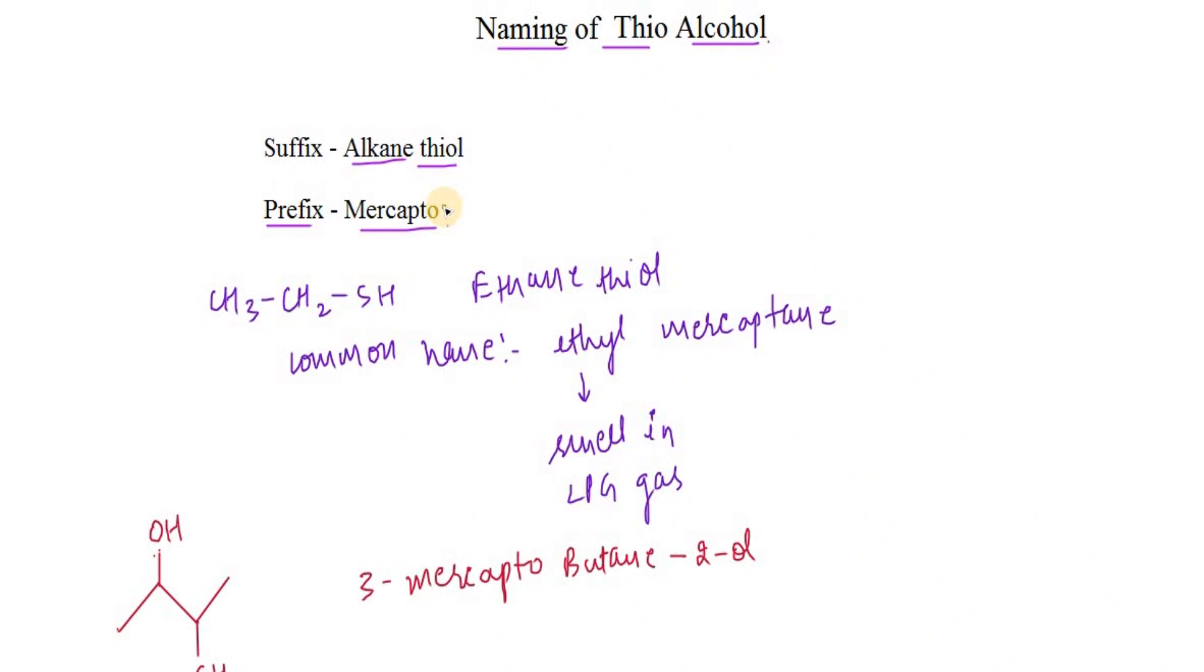Let's see an example: CH3-CH2-SH. This is ethethiol. The common name we use is ethyl mercaptan.